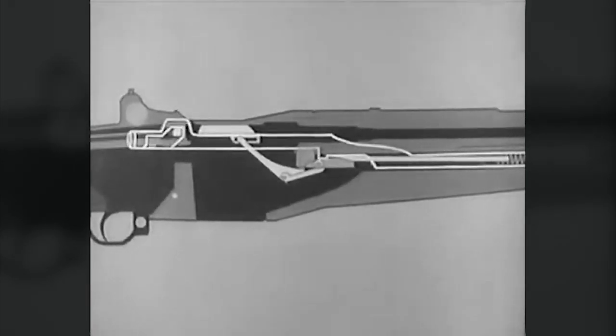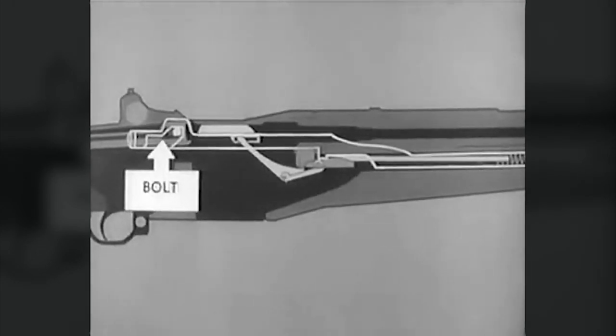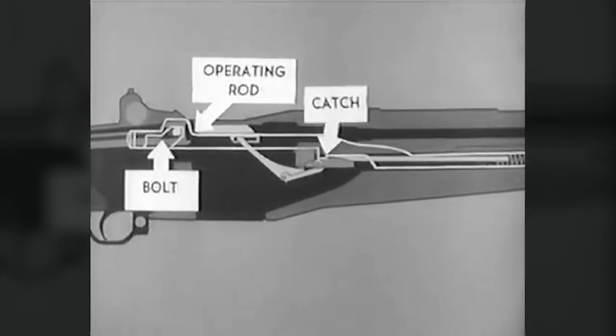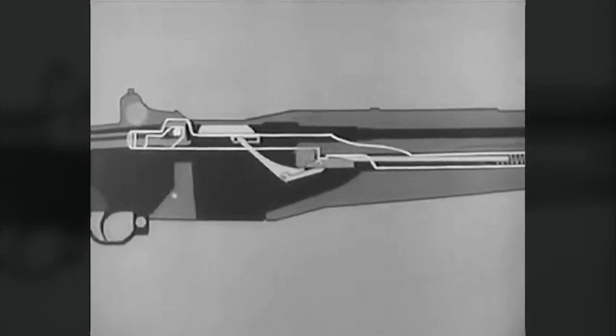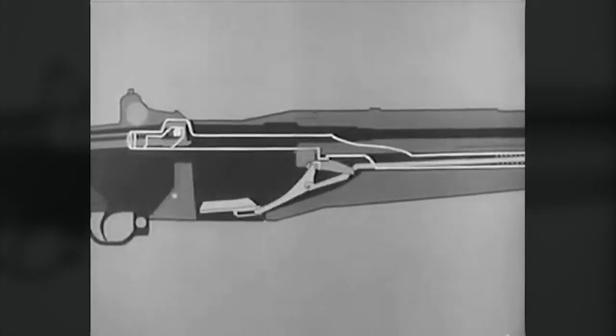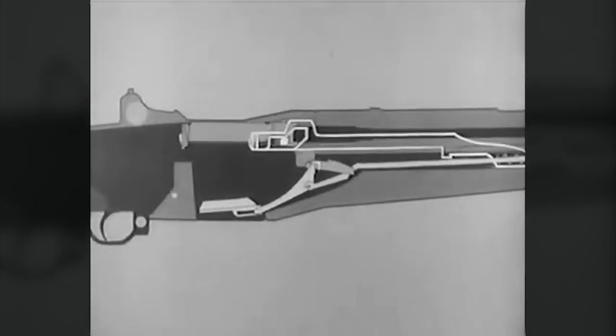Notice that the bolt is held to the rear by the operating rod, and the rod is held by its catch. Now watch the accelerator as the follower moves down. It rotates, camming the operating rod catch down. When the catch disengages, the rod starts forward, pushed by its compressed spring and carries the bolt with it.